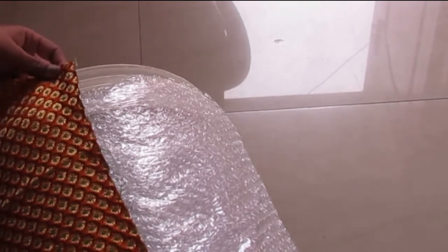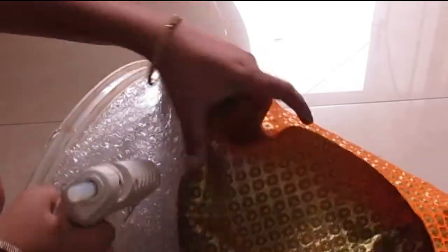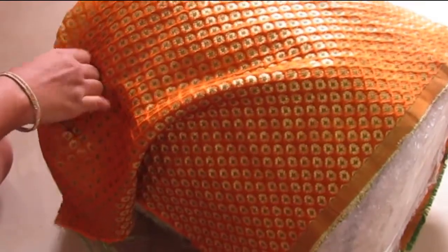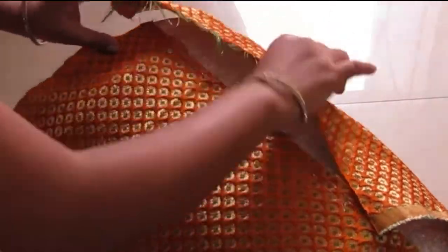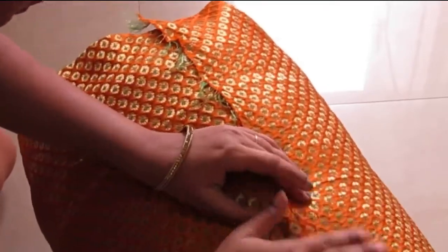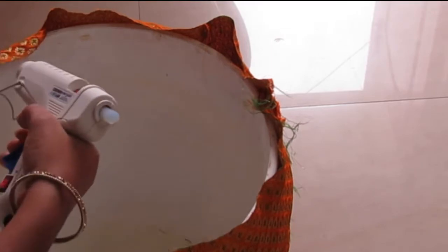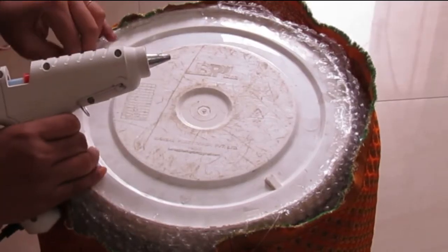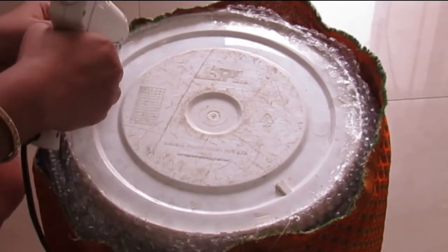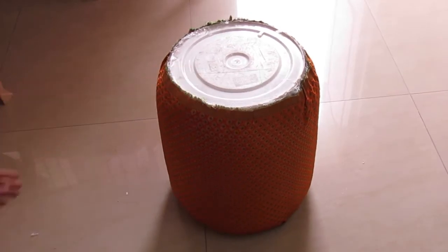Now paste it on this bubble wrap using hot glue. Cover all the parts like I am doing here. Now paste it upward and downward as well. Now the body is done. This is how it looks.